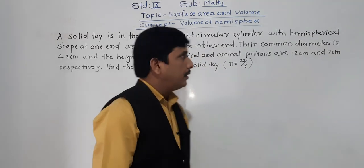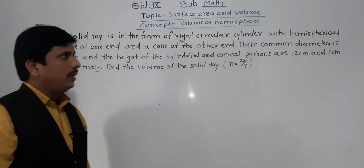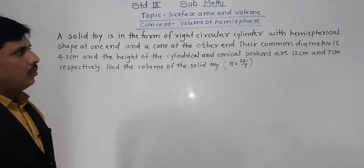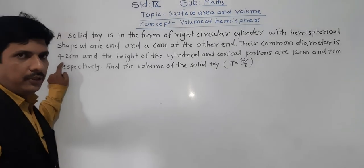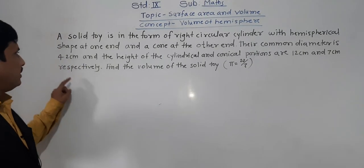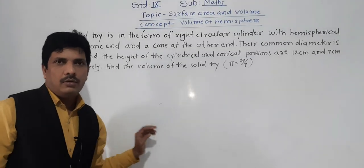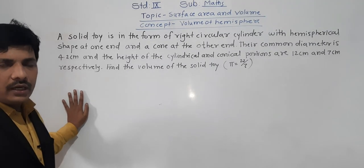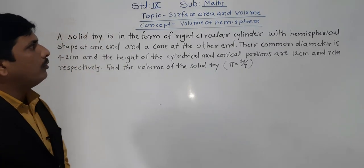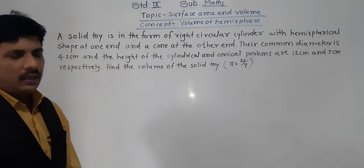Our second problem: a solid toy is in the form of a right circular cylinder with a hemispherical shape at one end and a cone at the other end. Their common diameter is 4.2 cm, and the heights of the cylindrical and conical portions are 12 cm and 7 cm respectively.